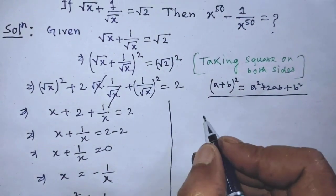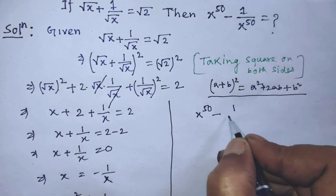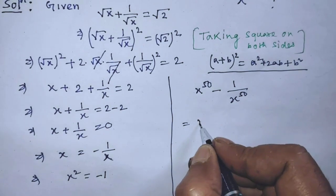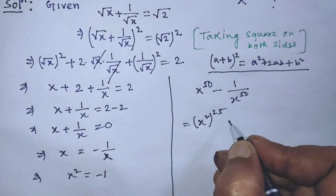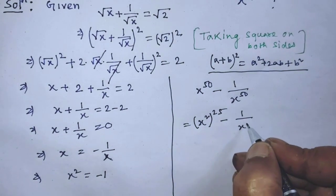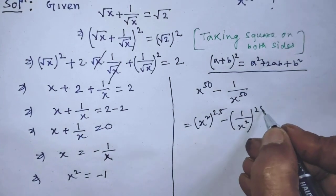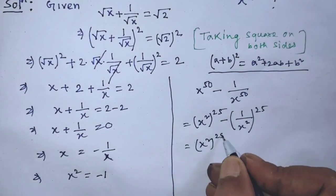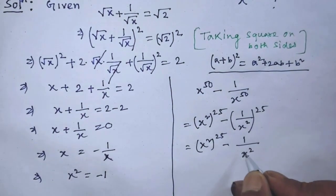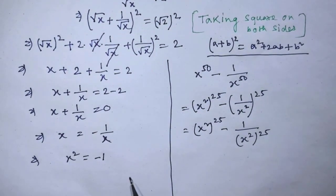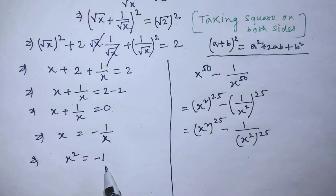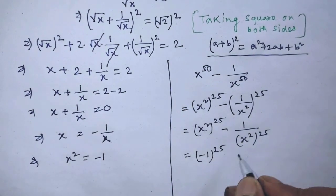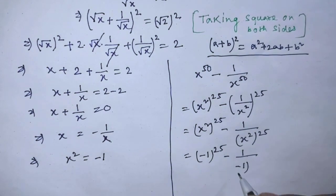Now we have to find the value of x to the power 50 minus 1 over x to the power 50. We can rewrite this as x squared whole to the power 25 minus 1 over x squared whole to the power 25. If we substitute x squared equals minus 1 into this expression, we get minus 1 whole to the power 25 minus 1 over minus 1 whole to the power 25.